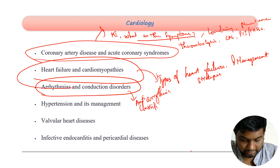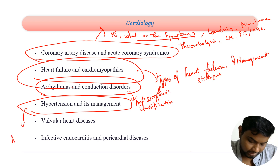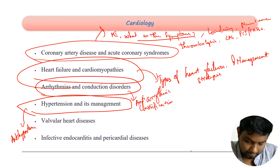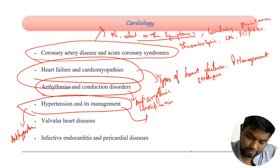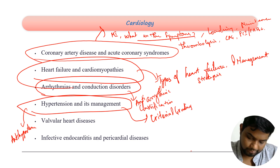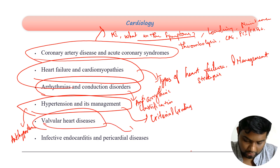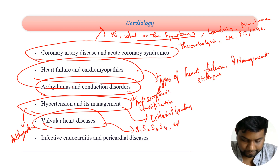Then you have hypertension and its management. In the pharmacology section we covered antihypertensives, so you need to know the criteria and grading of hypertension and the management guidelines — these are pretty important. Then, all the abnormal S1, S2, S3, S4 extra heart sounds and abnormal heart sounds should be covered.